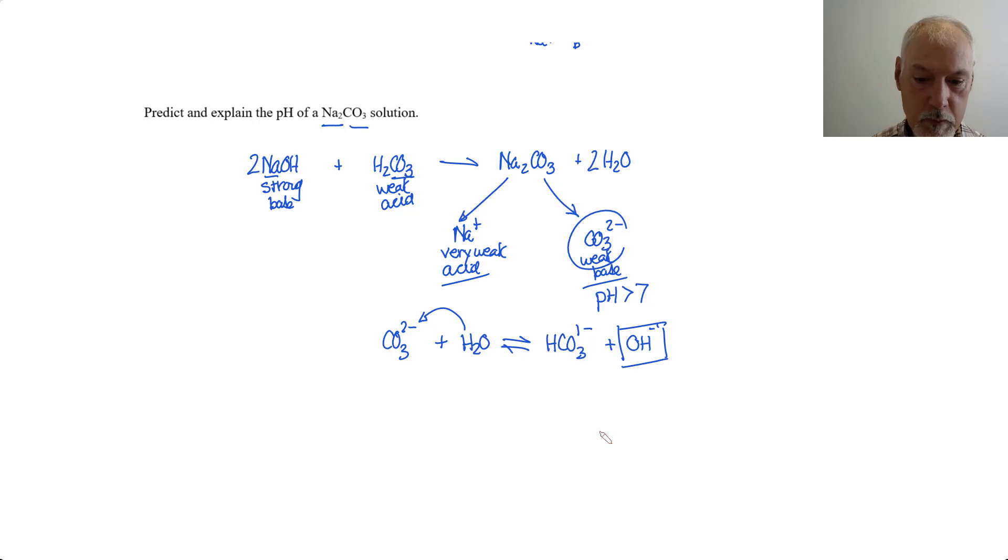So just remember those two points: the ionic salt is capable of acting both as an acid and a base. The second, the stronger the parent, the weaker its conjugate.